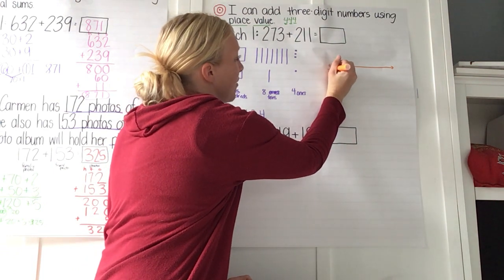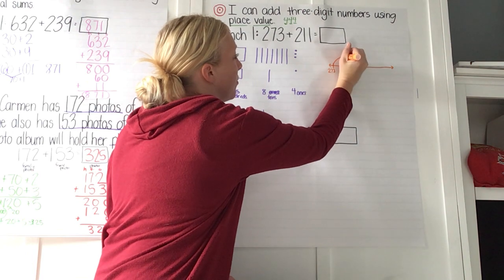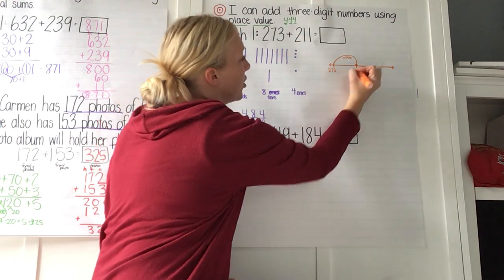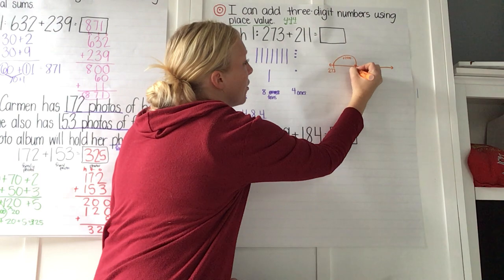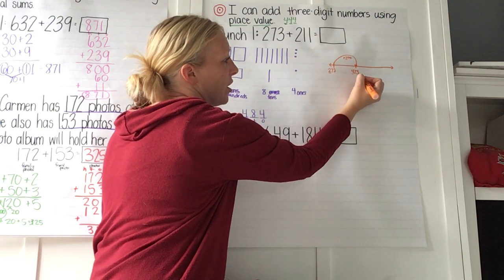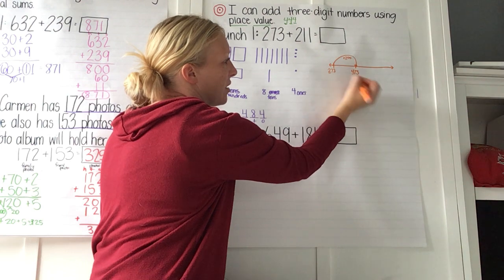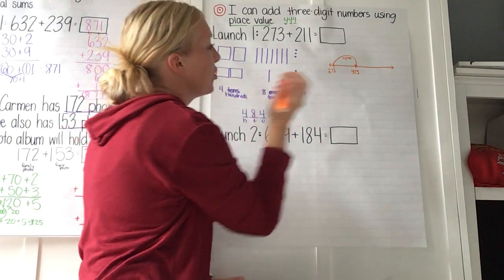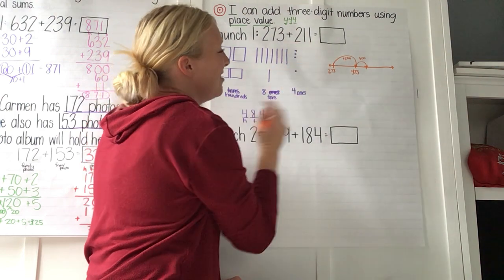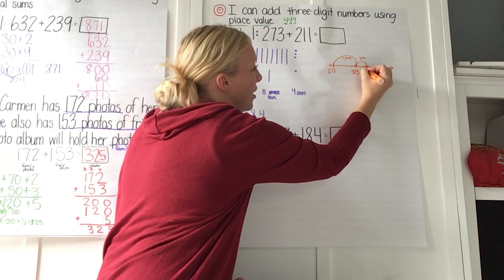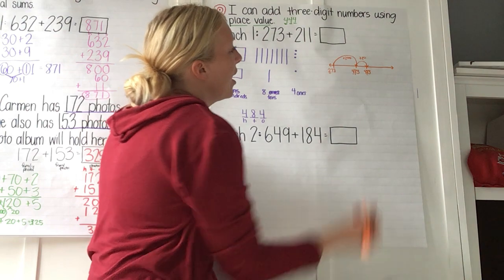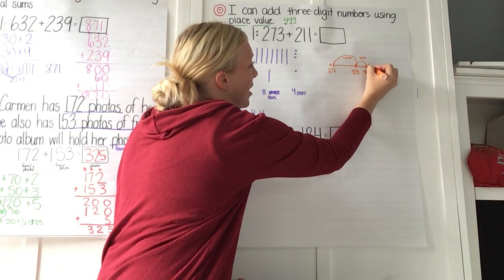You started with 273 on the number line. And then what did you do? You added 200 — because in 211 there's 200. So you landed on 473, because 200 plus 200 is 400, seven tens plus zero tens is seven tens, three ones plus zero ones is three ones. Then you added a 10 — there's that one ten in 211 — so that's 483, because seven tens plus one ten is eight tens. And then one more is 484.